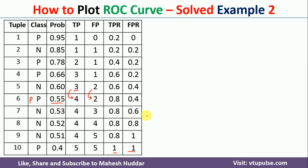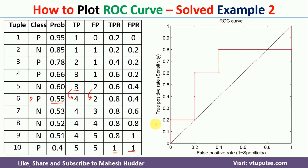Once you get all these values, we need to draw the ROC curve. We will plot true positive rate against false positive rate. True positive rate is nothing but sensitivity, and false positive rate is nothing but 1 minus specificity.